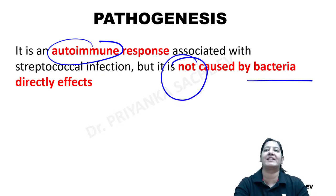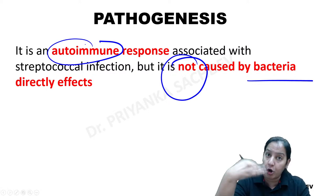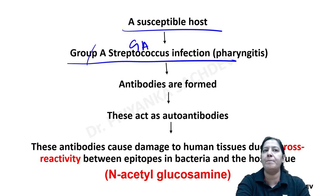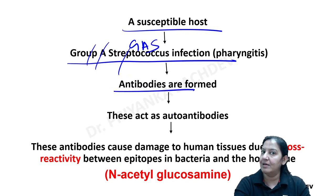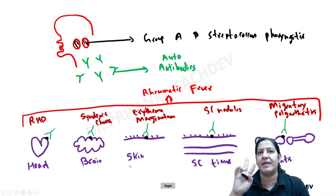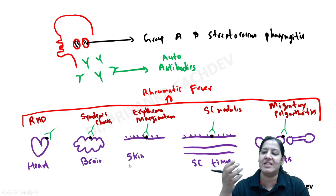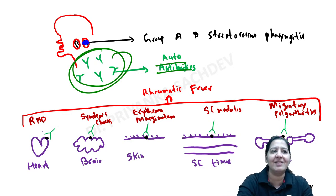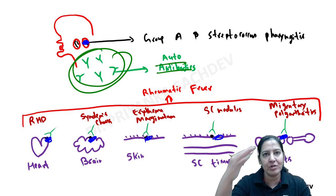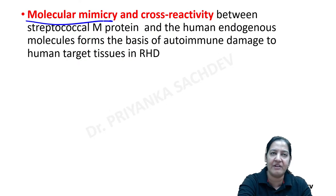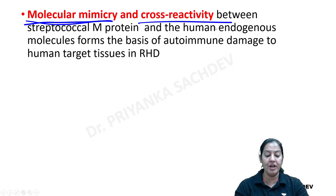The pathogenesis: it is an autoimmune disease, not caused by bacteria. A susceptible child gets infected by Group A beta-streptococcus. The body forms antibodies that cross-react with five organs because the M protein antigen is shared between the bacteria and the five organs. This is known as molecular mimicry and cross-reactivity. The five organs mimic the bacteria's epitope, and the antibodies cross-react.